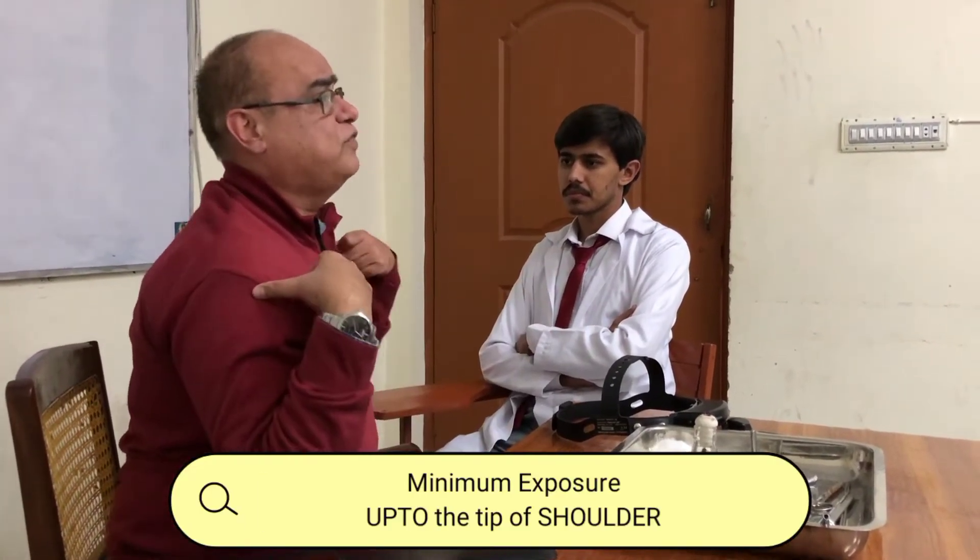Coming to my specialty, ENT: after introduction and having the consent of the patient, the minimum exposure required for ENT examination is up to the tip of the shoulders, because at the end we have to examine the neck for lymph nodes. The position is that the patient's legs should be on one side and your legs on the other side, and you will be roughly at an arm's length from the patient.